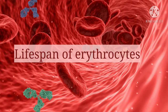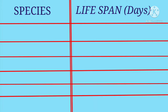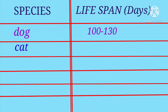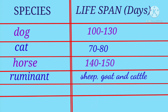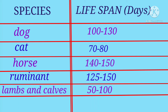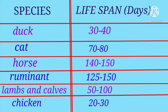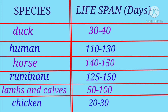Let's study about the lifespan of erythrocytes. Lifespan of erythrocytes also varies with the species. In dog, lifespan is 100 to 130 days. In cats, lifespan is 70 to 80 days. In horse, it is 140 to 150 days. In ruminants, in case of sheep, dogs and cattle, it is 125 to 150 days. In lambs and cows, it is 50 to 100 days. In chickens, it is 20 to 30 days. In ducks, it is 30 to 40 days. And in humans, 110 to 130 days, with an average of 120 days.